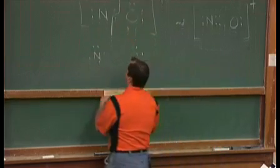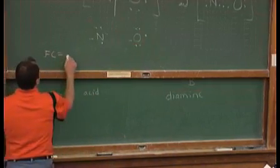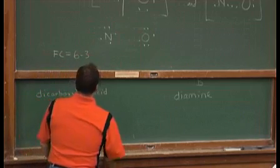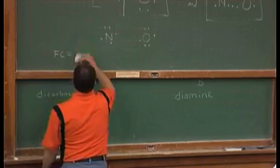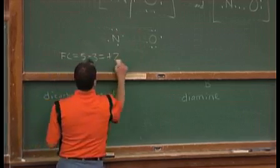The formal charge is calculated for each atom. The formal charge on the left here is going to be six minus, oh my goodness, it's five minus three, is equal to positive two.